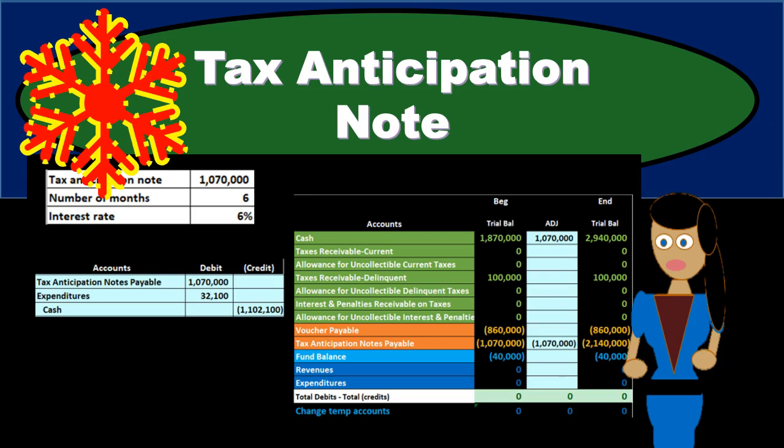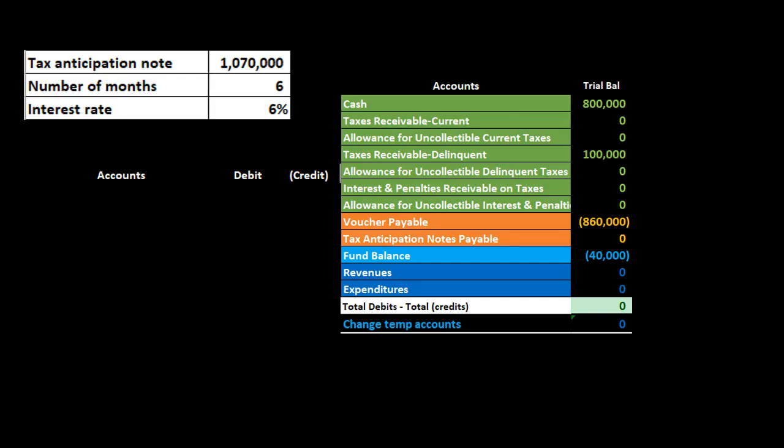In this presentation we will take a look at an example of recording a tax anticipation note within a general fund. This is going to be our information: we have the tax anticipation note at $1,070,000, the number of months is six, and the interest rate is six percent.